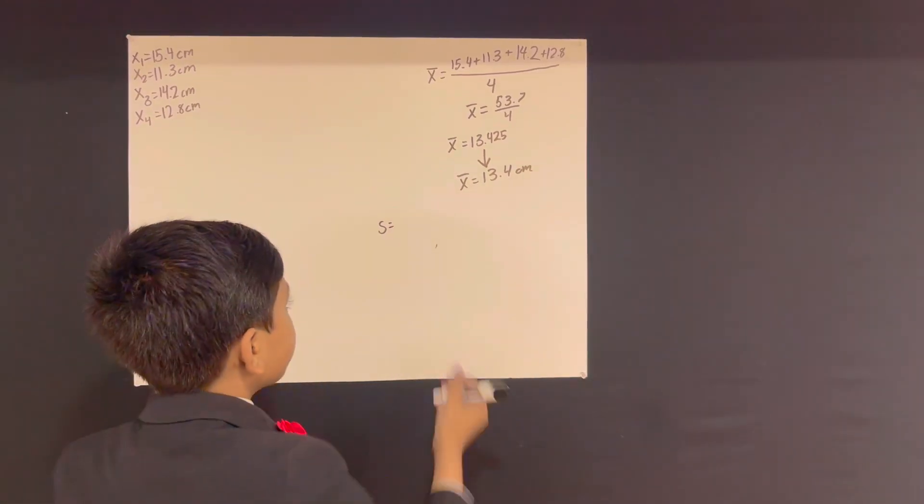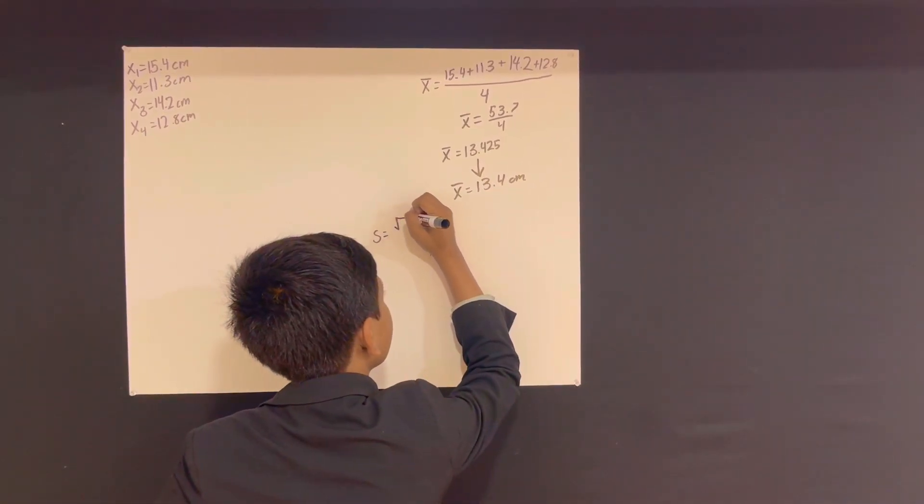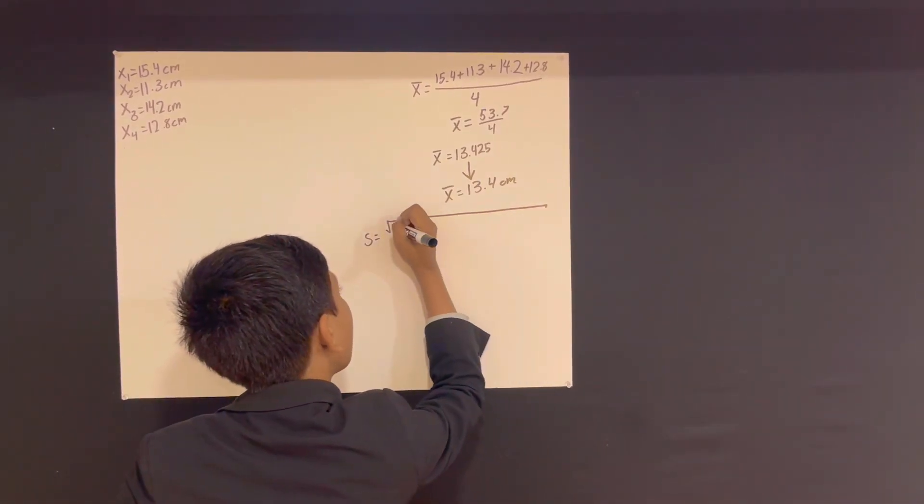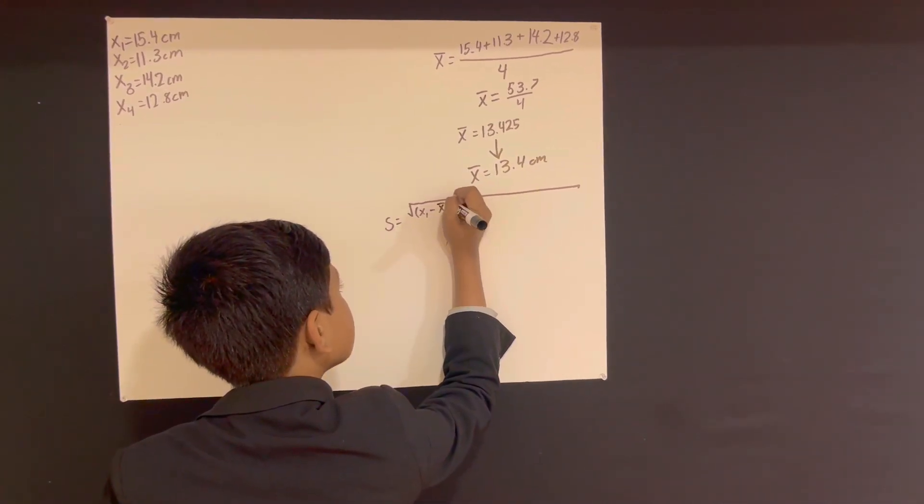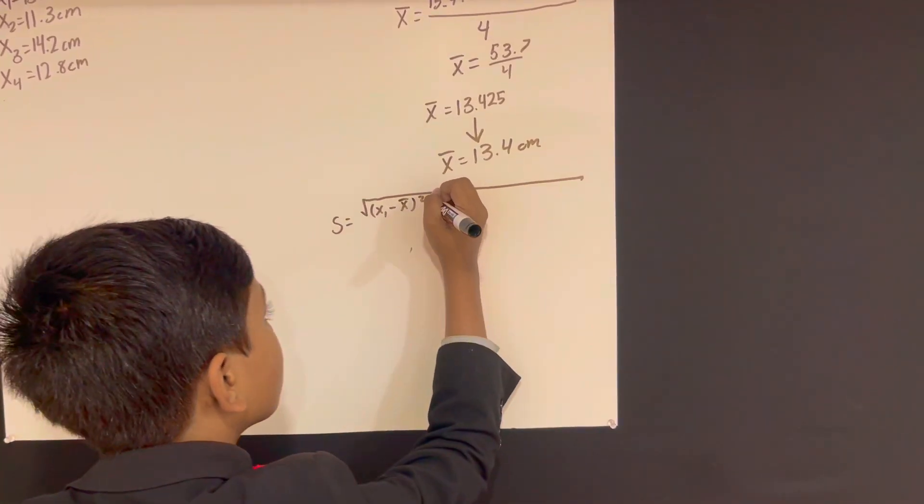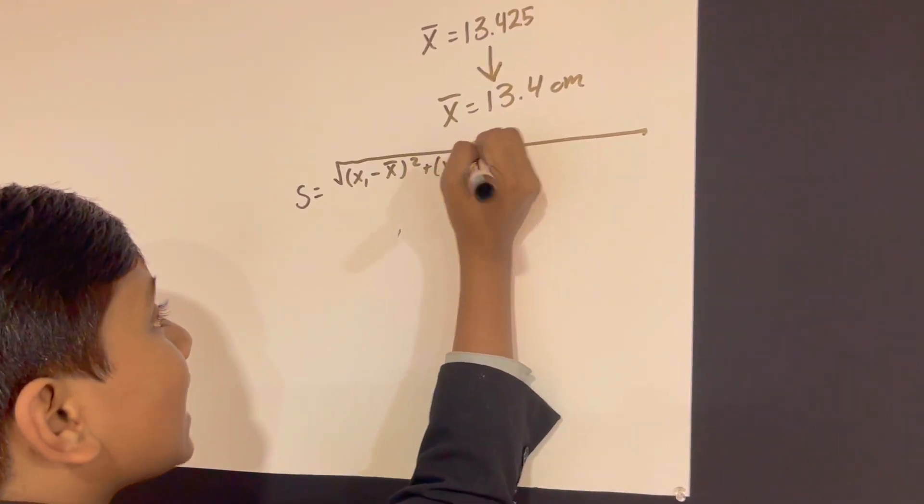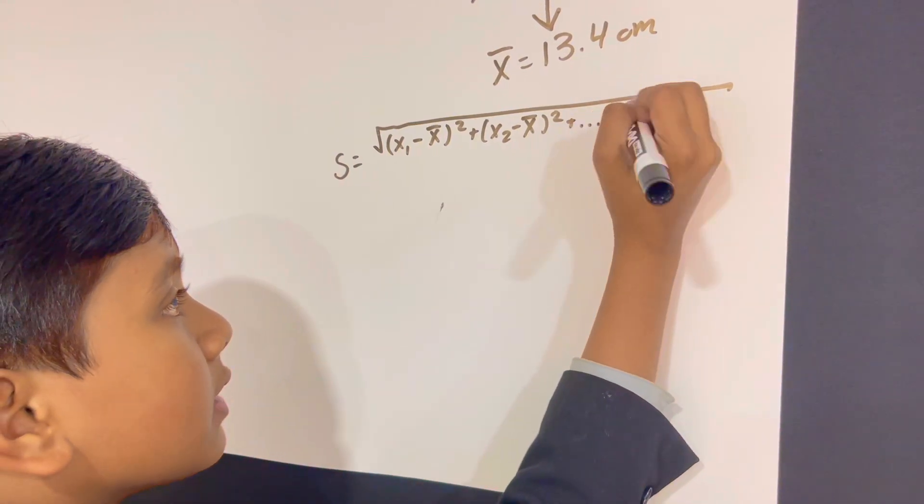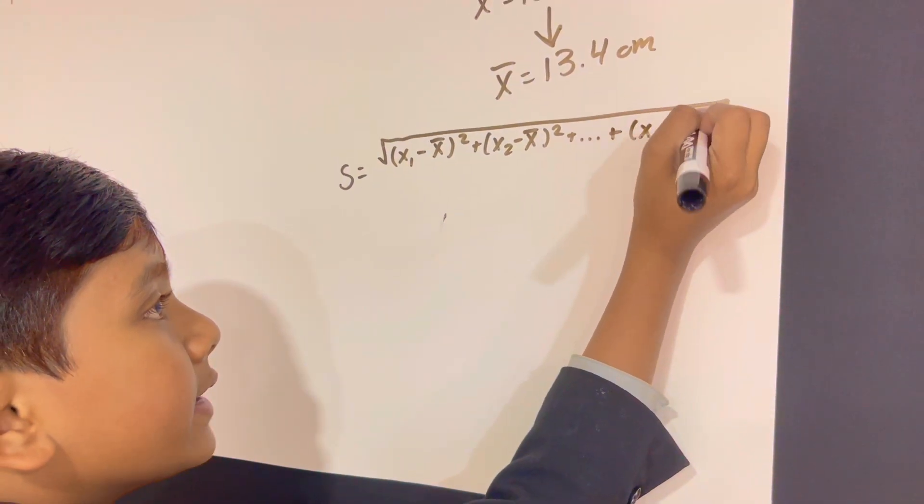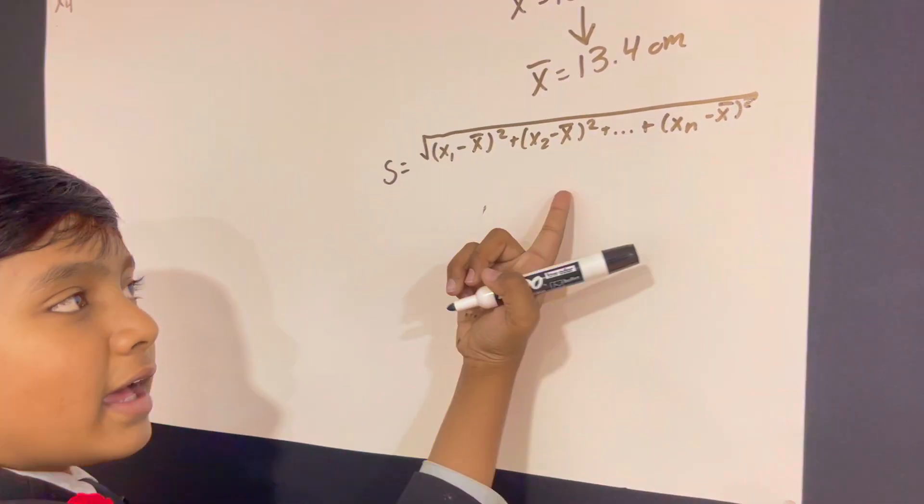The standard deviation of the radius if you don't remember is x1 minus x bar squared plus x2 minus x bar squared plus x2 minus x bar squared plus xn minus x bar squared. So that equation.